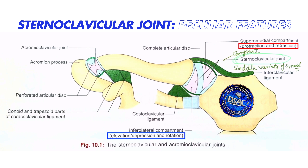Then there is this compartment towards the clavicular end — this is the infralateral compartment. In this infralateral compartment, the movements that occur are elevation, depression, and rotation. That means you can move the clavicle upwards and downwards over the manubrium in this compartment. Apart from elevation and depression, there is also a twisting movement possible here, like when you are doing bowling in cricket — that means circumduction movements at the shoulder joint.